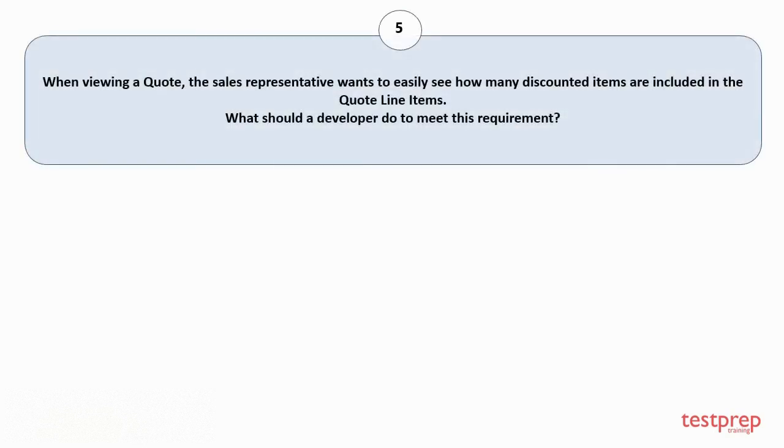Question number 5: When viewing a Quote, the sales representative wants to easily see how many discounted items are included in the Quote Line Items. What should a developer do to meet this requirement? Your options are.